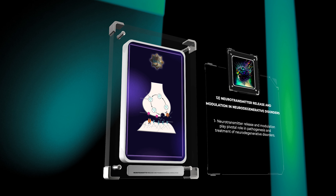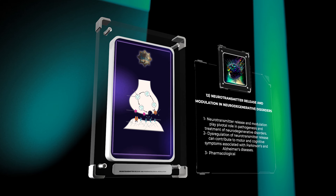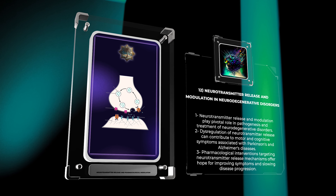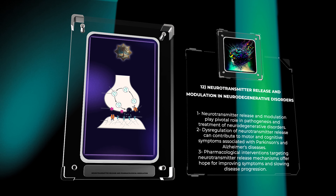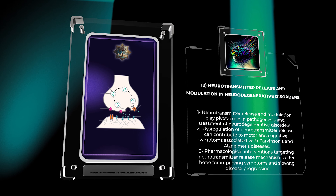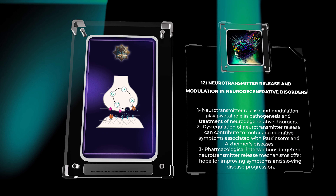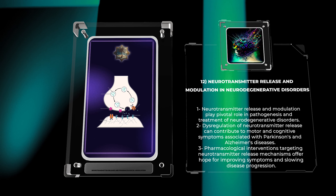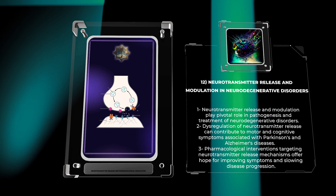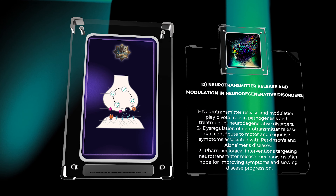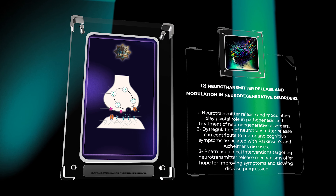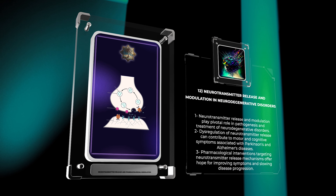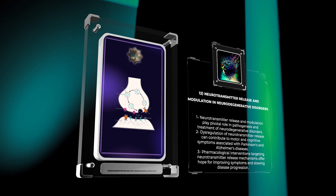Neurotransmitter release and modulation play a pivotal role in the pathogenesis and treatment of neurodegenerative disorders such as Parkinson's and Alzheimer's diseases. Dysregulation of neurotransmitter release can contribute to the motor and cognitive symptoms associated with these conditions. Pharmacological interventions targeting neurotransmitter release mechanisms offer hope for improving symptoms and slowing disease progression in these debilitating disorders.